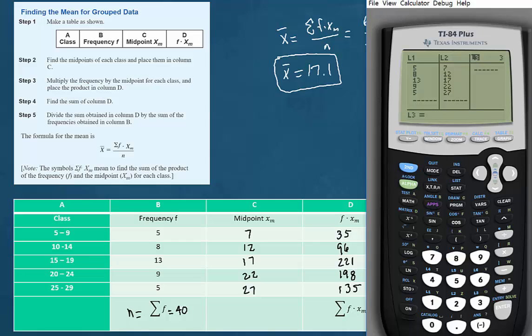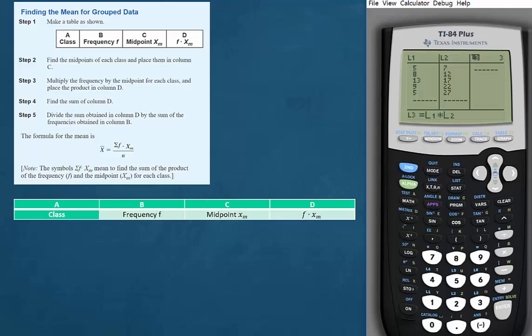So we'll go up and highlight list 3 and then punch second L1 times second L2 and hit enter. Now the entries in list 3 are the products of the corresponding entries in lists 1 and 2.